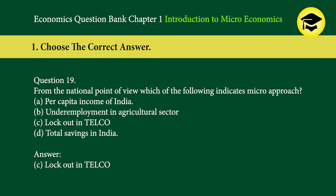Question 19: From the national point of view, which of the following indicates a micro-approach? A. Per capita income of India, B. Underemployment in agricultural sector, C. Lockout in TELCO, D. Total savings in India. Answer: C. Lockout in TELCO.